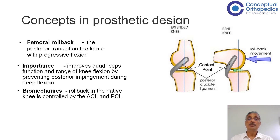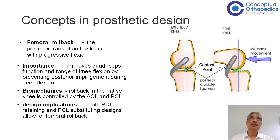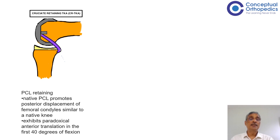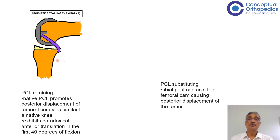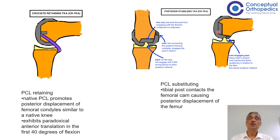In the normal knee, rollback is controlled by the anterior and posterior cruciate ligaments, and this has to be incorporated in any type of design available in the market. In the cruciate retaining design, the native posterior cruciate ligament which is retained promotes the posterior displacement of the femoral condyles. Whereas in the cruciate substituting design, the cam in the femur articulates with the post on the tibial side, and this helps to achieve the rollback.